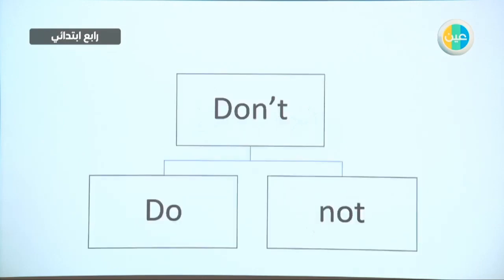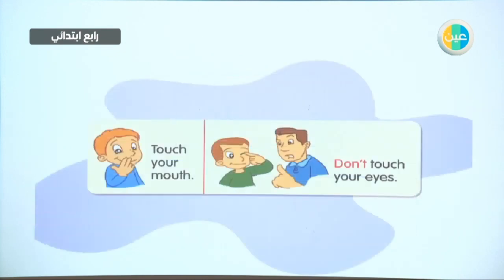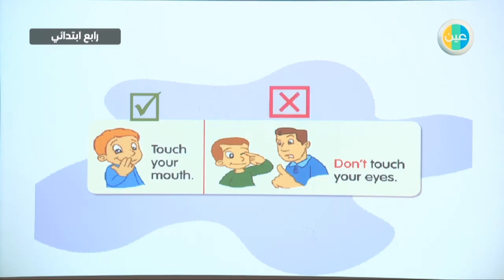So we heard the word 'don't'. When we don't want you to do something, it consists of two words: do and not — together we say 'don't'. Touch your mouth — it means it's okay to touch your mouth, so do it. But here he's telling him not to touch the eyes: don't touch your eyes.